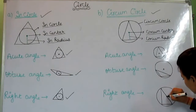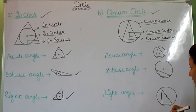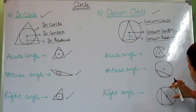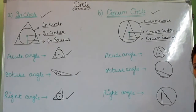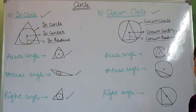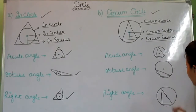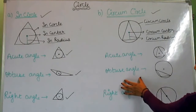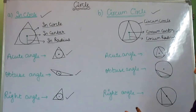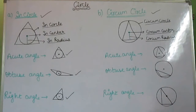In an obtuse angle, this is the circumcenter. And in a right angle, the circumcenter always lies at the midpoint of the hypotenuse. This is our hypotenuse, and this midpoint is also called the diameter. So this is the point you should remember: in an obtuse angle, the circumcenter lies outside the triangle, and in a right angle, the circumcenter lies at the midpoint of the hypotenuse.